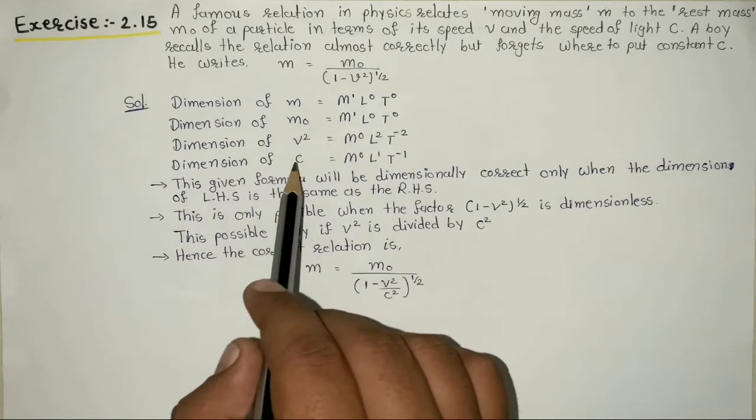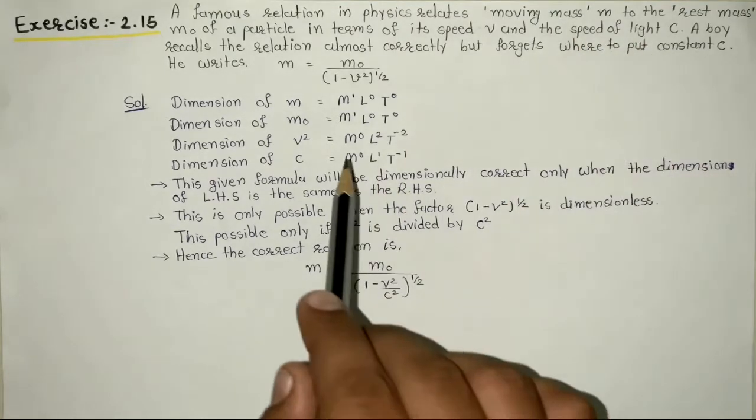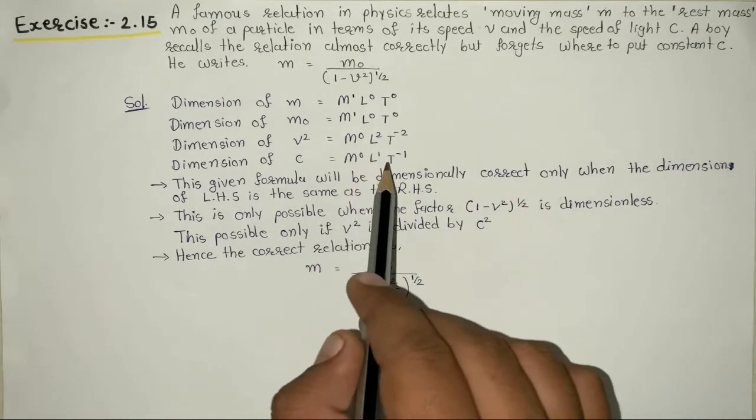Dimension of c, which is the speed of light constant, is L¹T⁻¹.